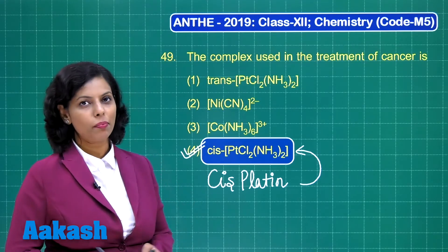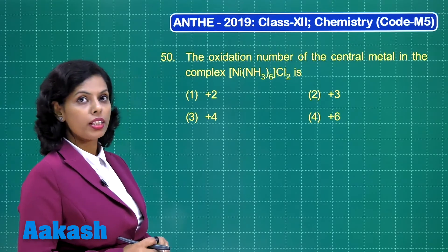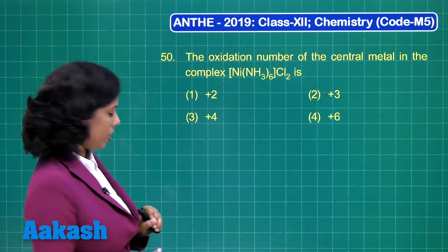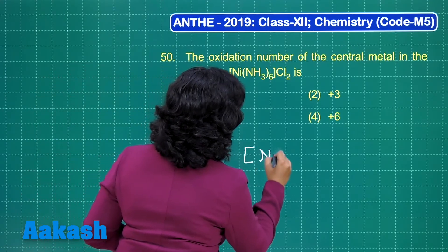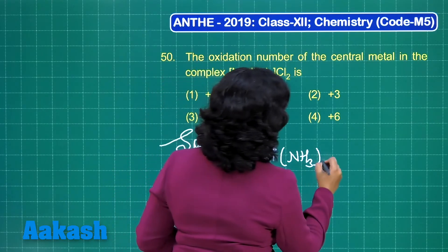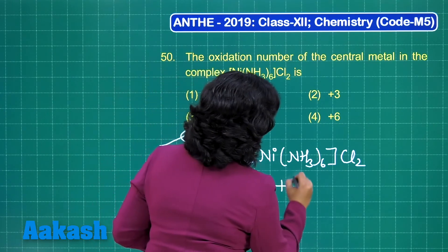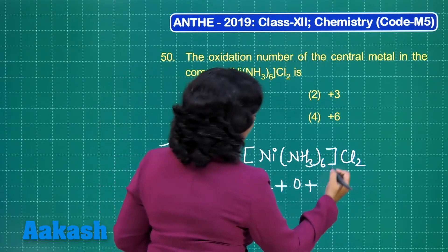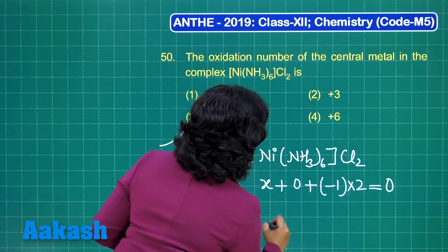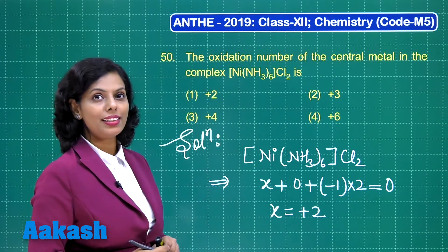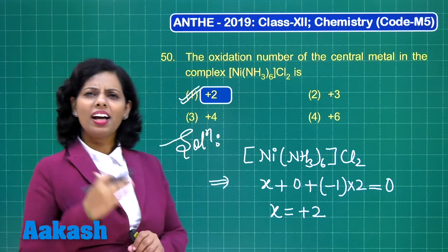The last question of this ANTHE 2019 paper: find the oxidation number of the central metal in the given nickel complex. Assuming the oxidation number of nickel is x, ammonia is neutral (0), and each chloride is minus one with two chlorides present. So x + 0 + 2(−1) = 0, giving x = +2. The oxidation number of nickel is plus two, making option one the correct answer.